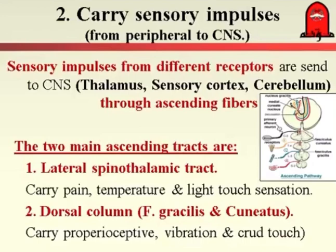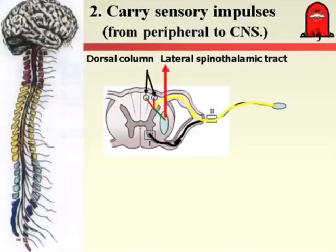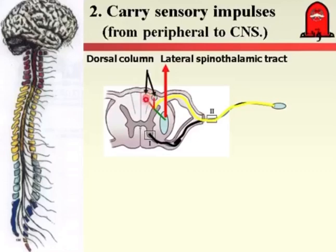The spinal cord is responsible for carrying sensory impulses from the periphery to the central nervous system. As impulses pass through the dorsal root ganglia, they are segregated and divided: some fibers travel upward to the higher center through the dorsal column, and other nerve fibers cross to the other side and ascend higher up through the lateral spinothalamic tract.